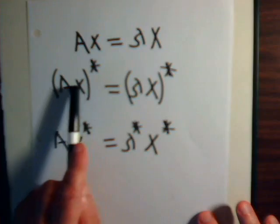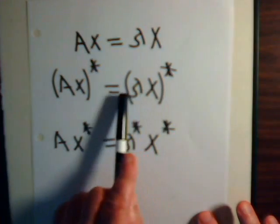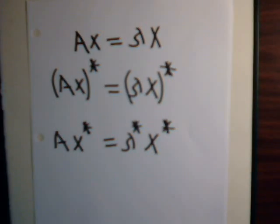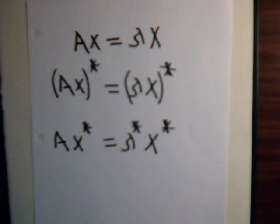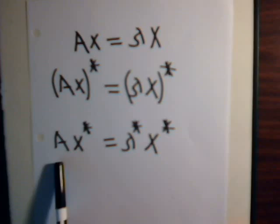So, let's just take the complex conjugate of both sides of the equation. Now, our matrix has real numbers. So, the complex conjugate of the matrix is still just A.